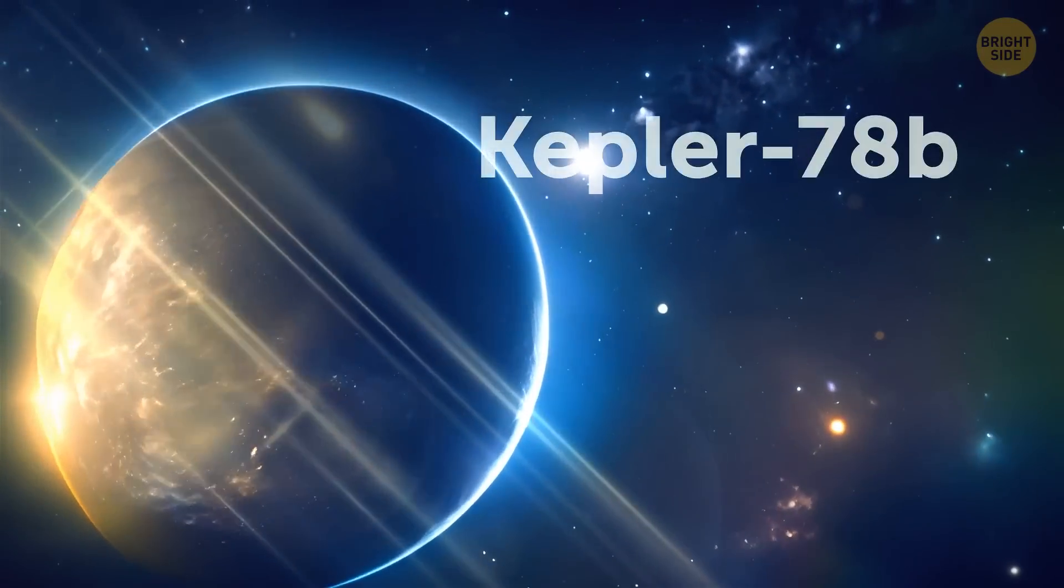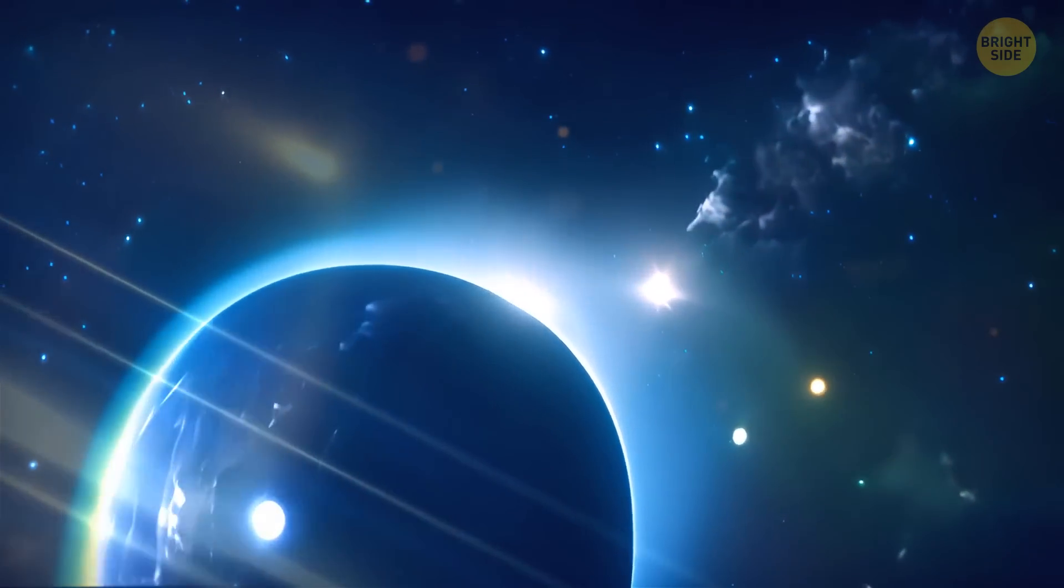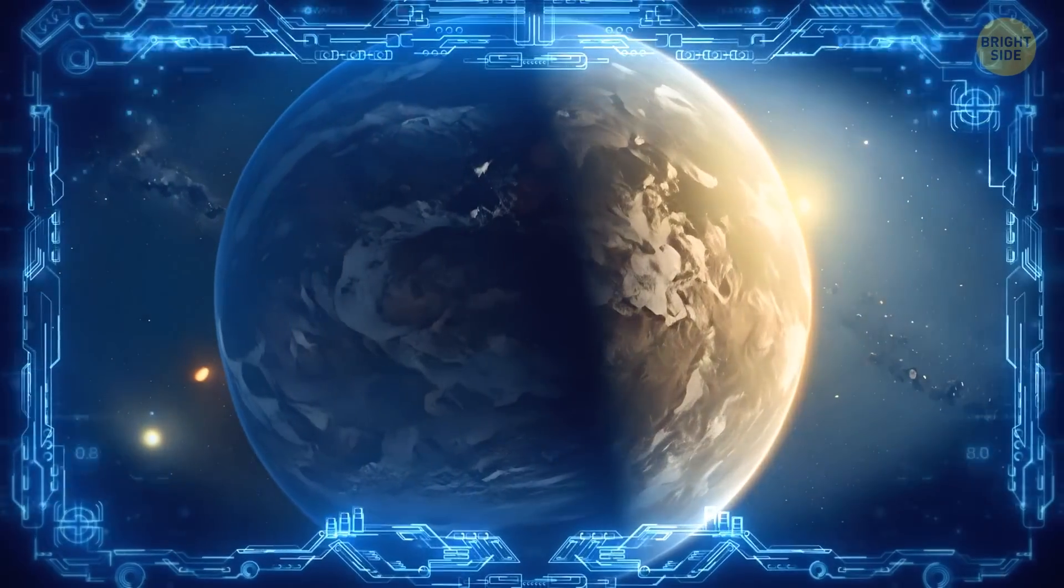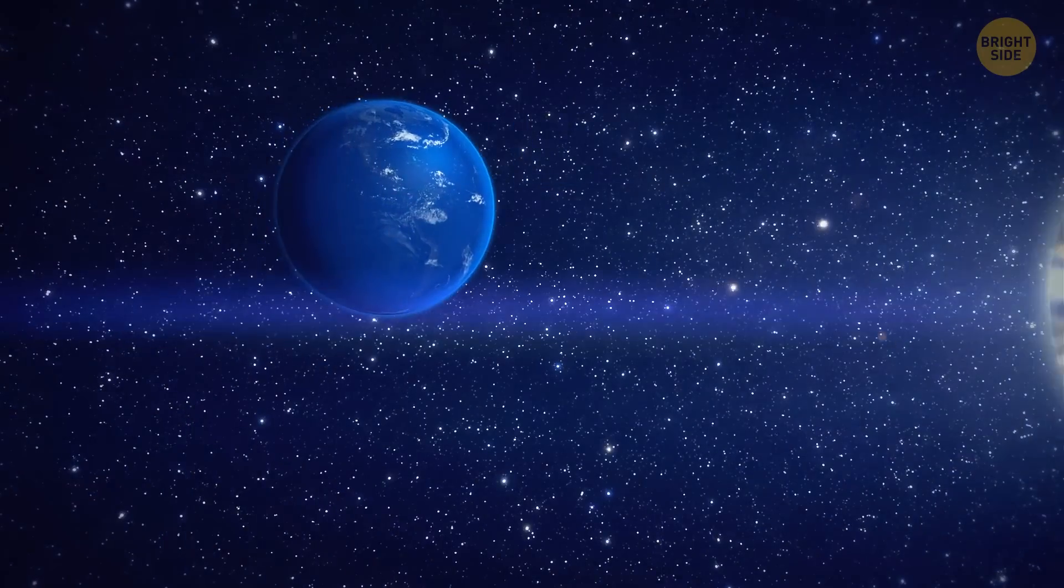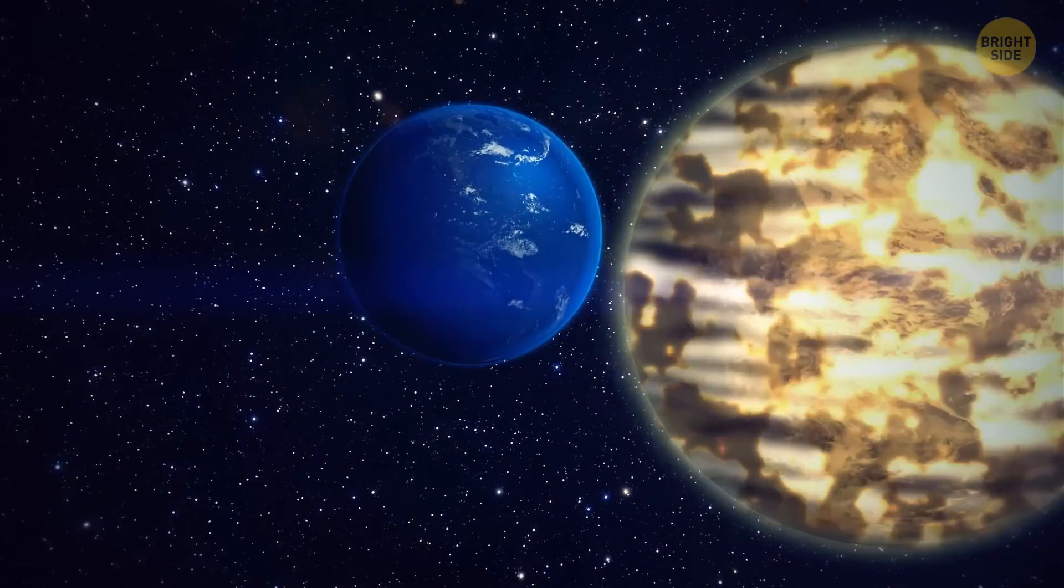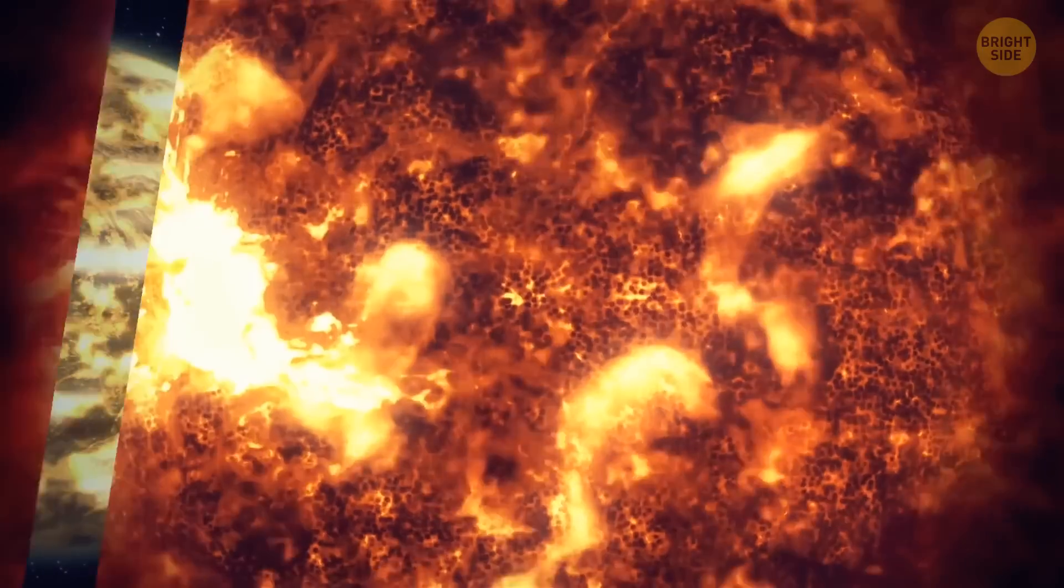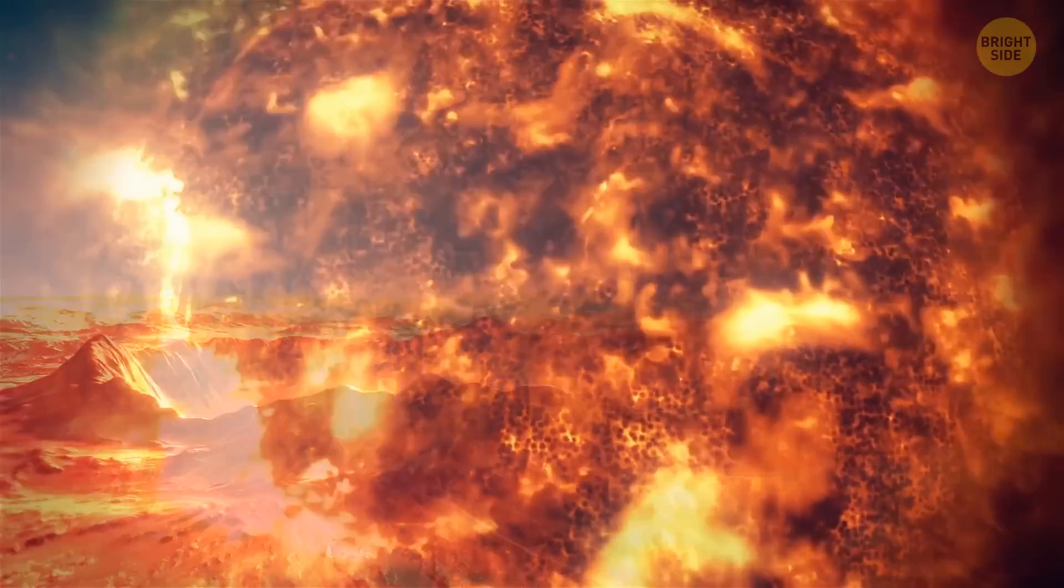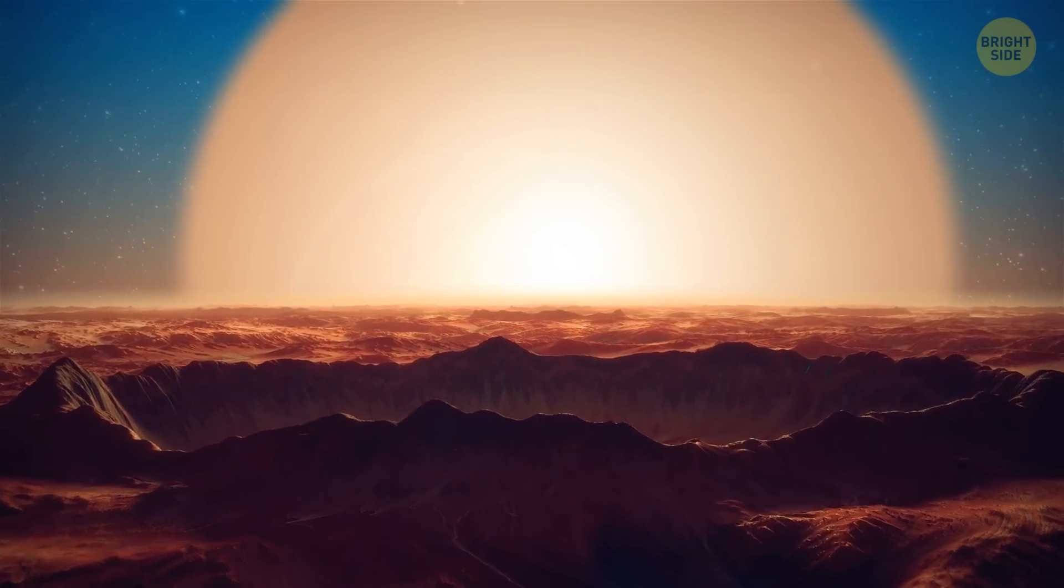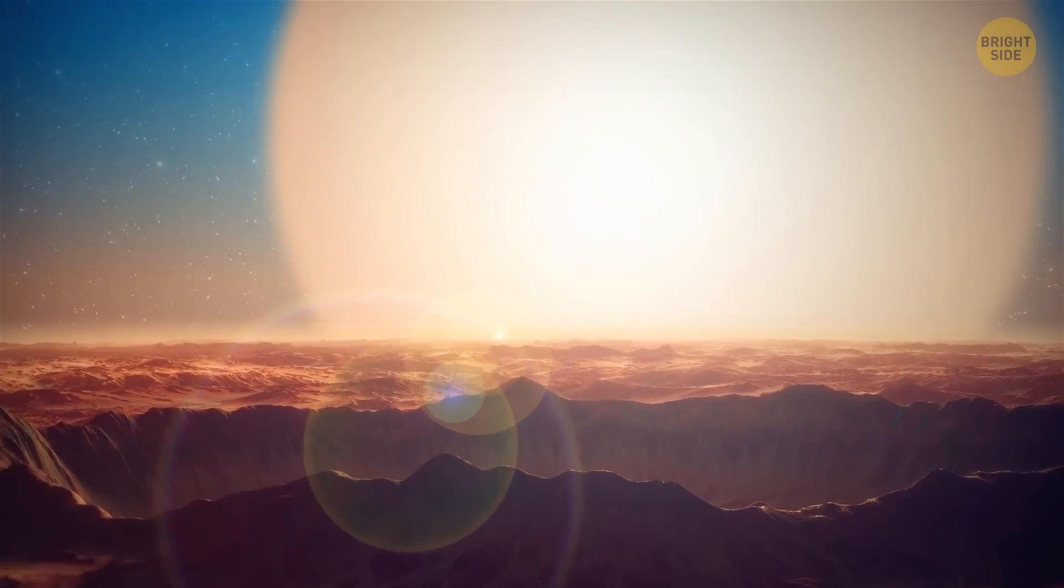Planet Kepler-78b is another weird cosmic discovery. It's a hot, molten world that's doing laps around its star in record time, once every eight and a half hours. And pretty close, less than one million miles away. Hot environments aside, if we could set foot on its surface, we'd notice its sun being 80 times larger on its sky than the daily view we have here on Earth from our star.